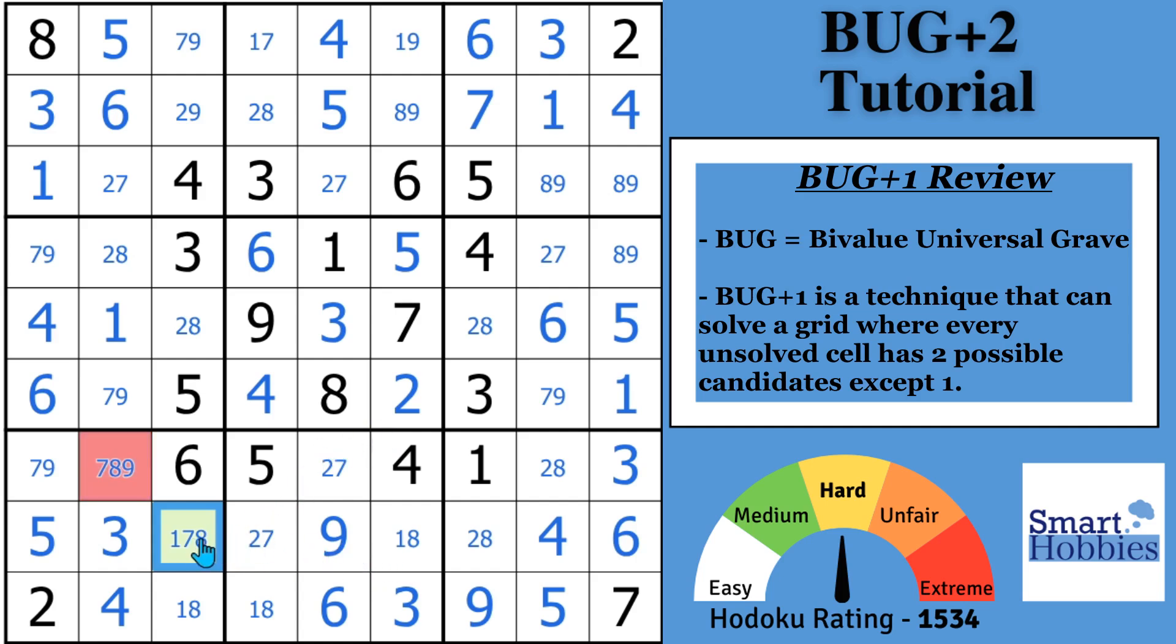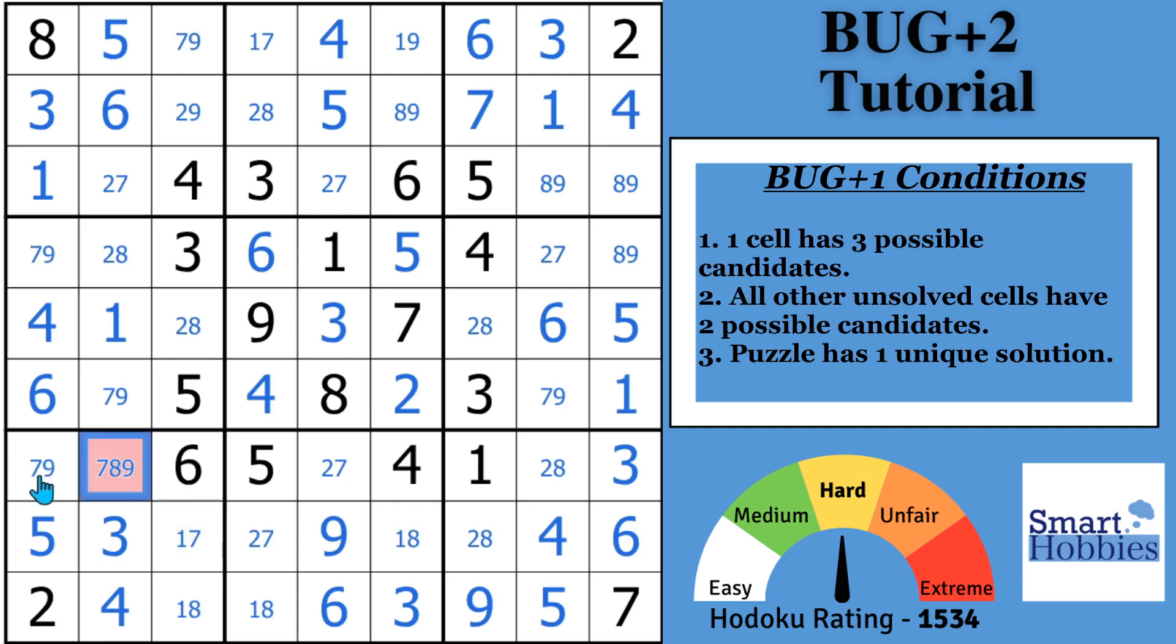So in this situation, if this was not an eight, then what you'd see is we'd have a BUG Plus 1 situation. And the red cell is the only one with three candidates. You can solve it pretty quickly by knowing that the seven appears three times in the block, three times in the column, and three times in the row.